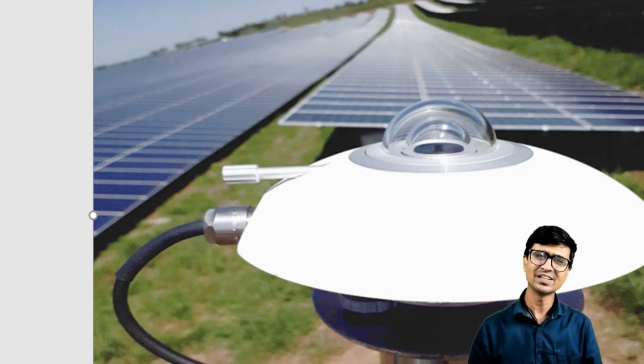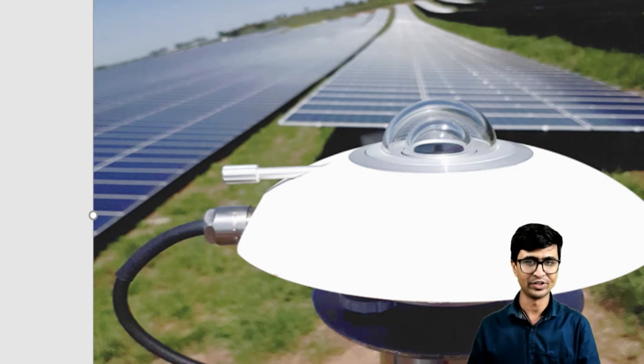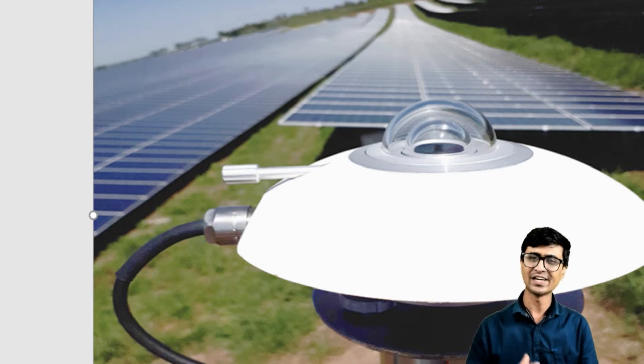What is a pyranometer? A pyranometer is a device used to measure irradiance. Irradiance is the power coming from the sun per meter square area. The SI unit of irradiance is watt per meter square.